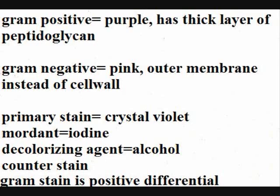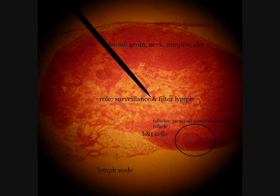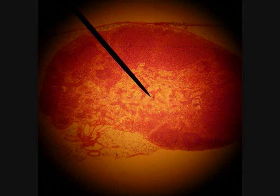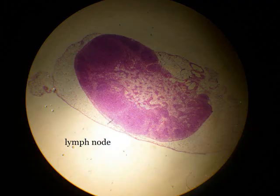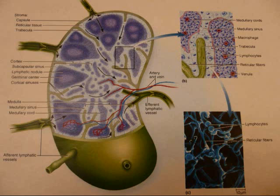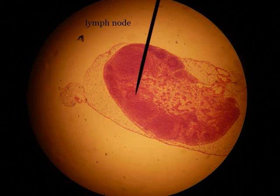Question three asks you to describe the events of acute inflammation in detail. The cells involved are neutrophils and macrophages, but also damaged cells and mast cells, which initiate inflammation. They release histamines, cytokines — particularly chemokines — and prostaglandins. Those are your chemical mediators.